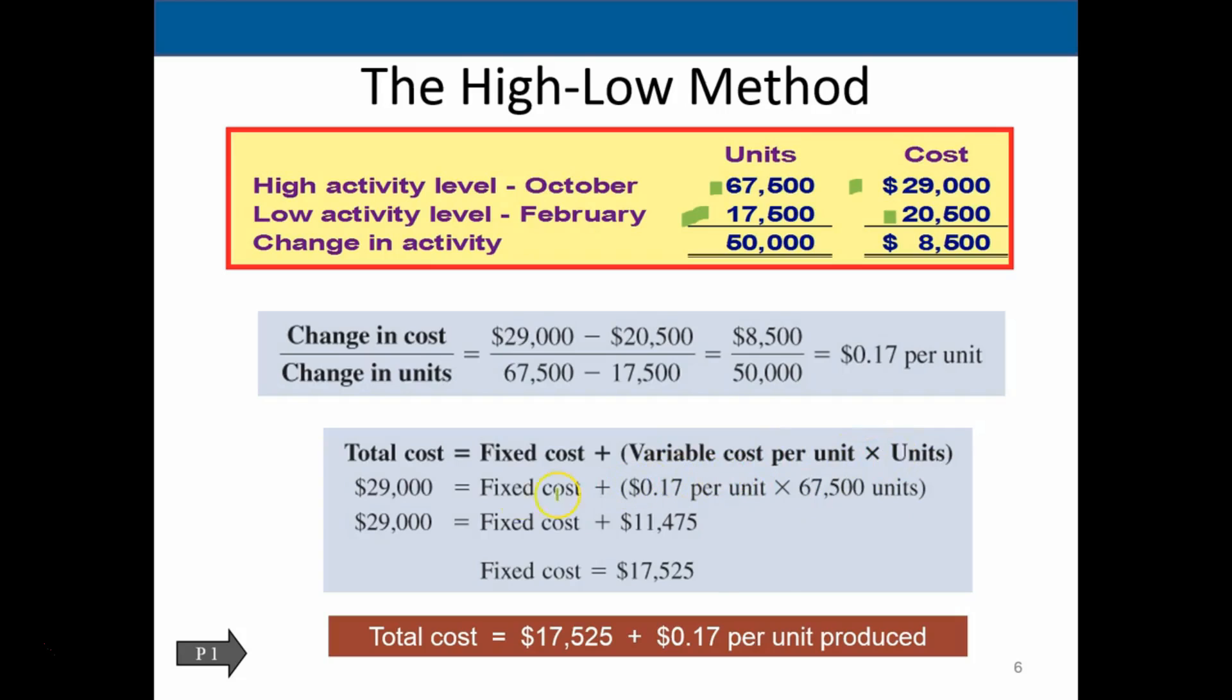So if we plug the numbers into this formula, we could say that the total cost is 29 if we're taking this level. And we have the fixed cost is the unknown, that's X. And then the cost per unit is the 17 cents. And we're going to take the 67.5 number of units, which we're pulling from here. If we plug that information in, we can do this multiplication. We come up with this. And then we can do the math and subtract the 11,475 from each side and come out with the fixed cost of 17,525.